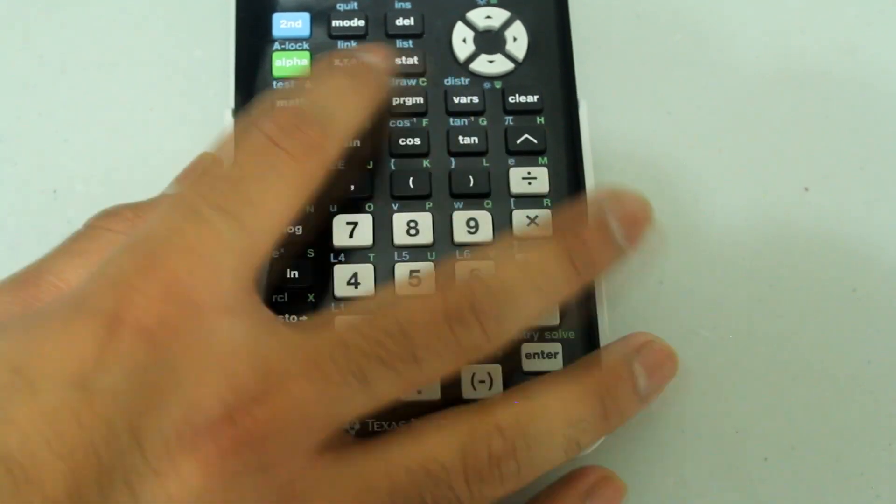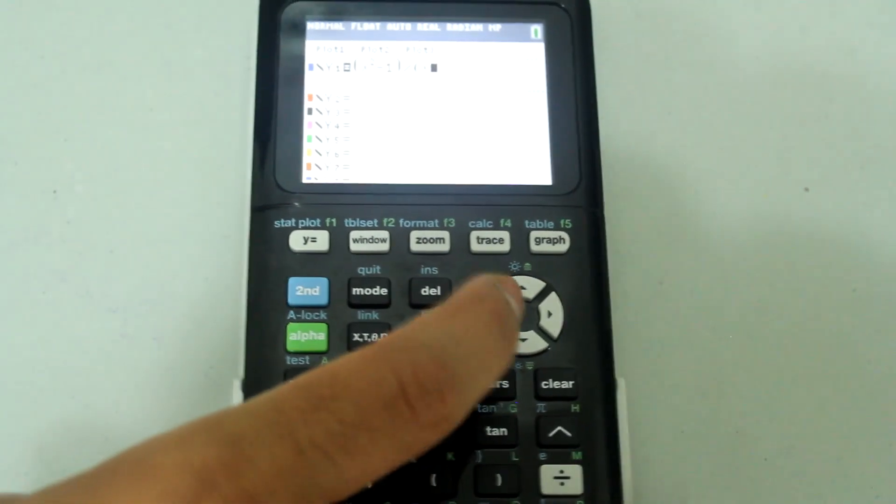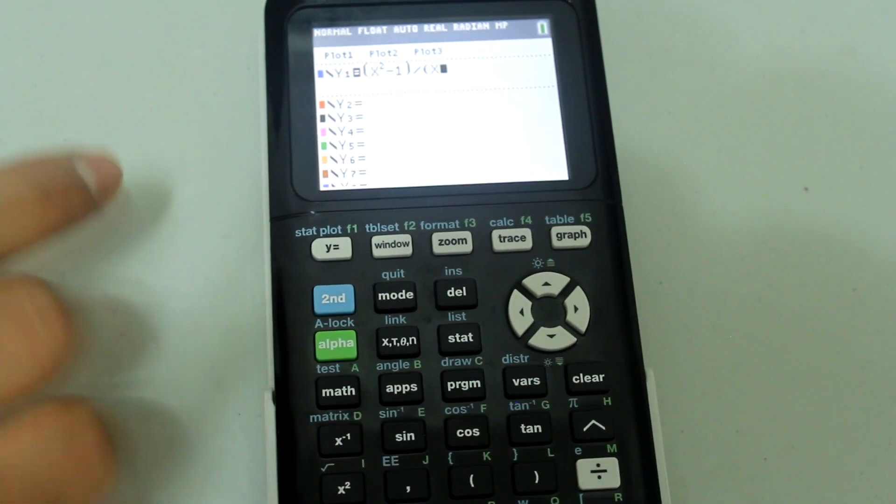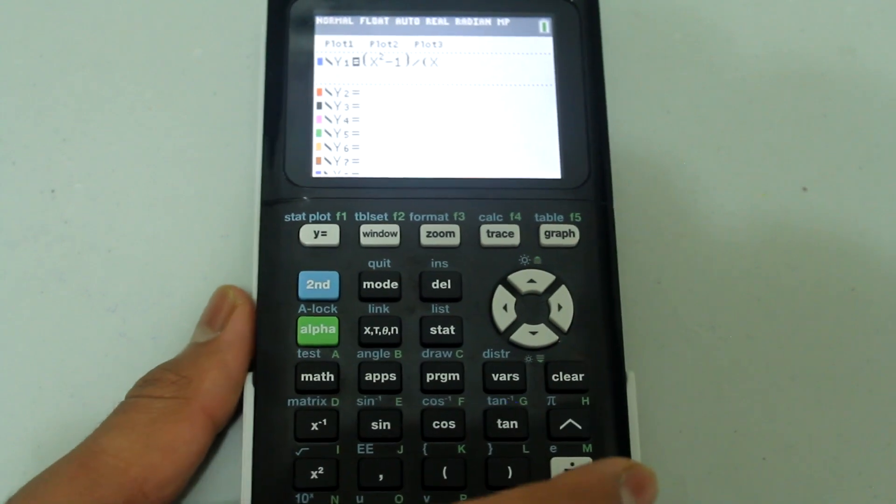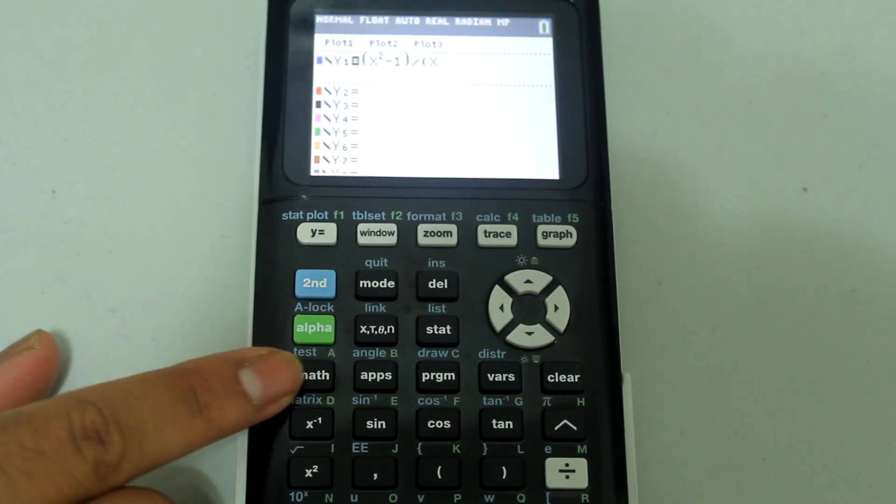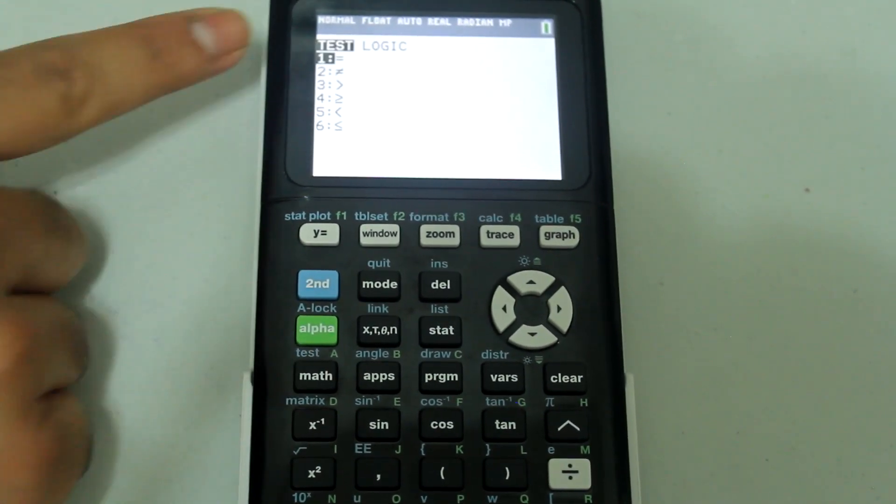We're going to press the division sign and we're going to open another parenthesis, type in x. It looks like this so far. And now I'm going to press 2nd and the math button to select the test feature. And now this comes up.